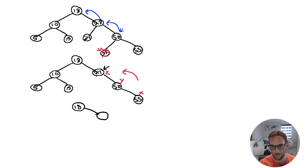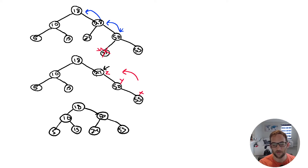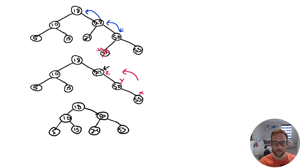After the left rotation, the right node becomes 50, with left child 24 and right child 55. The left subtree of 18 stays the same. Going back up to 18: left subtree height is 2, right subtree height is 2; 2 minus 2 is 0 — balanced.